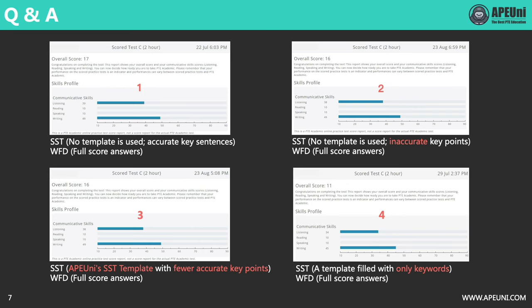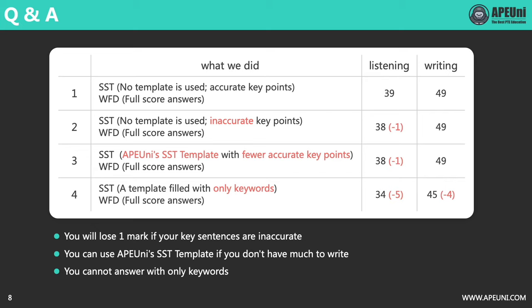In the fourth test, we tested whether it is possible to answer SST like Retell Lecture — filling a template with only keywords, which I see many students doing. We picked out around 20 keywords or phrases from the passage and put them into a template. We got 34 in listening and 45 in writing, which is the lowest in all four tests. To make it clearer, I have organized the results of the four experiments in this table. Let's see what conclusions we can get. The answer in test 1 is the model answer, which received full marks. The only difference between test 1 and test 2 is that test 2 picked out inaccurate key points, and test 2 is one mark less in listening.